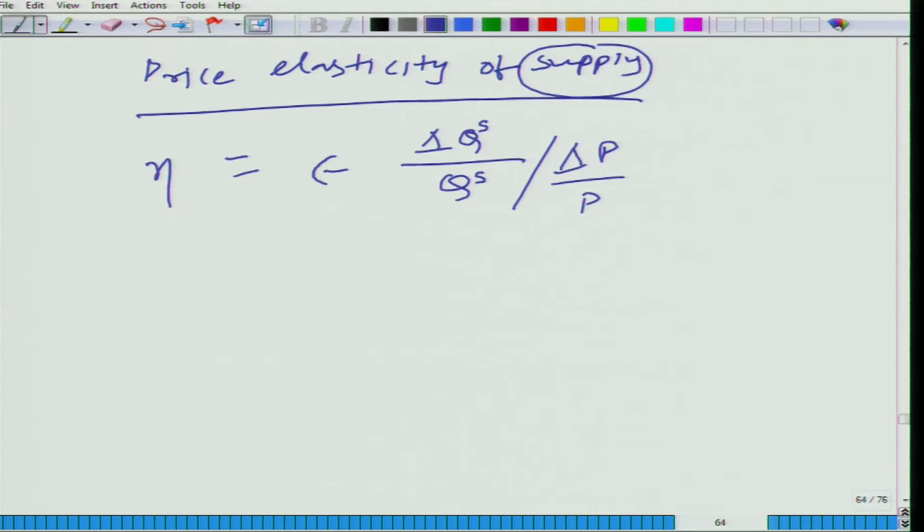The two differences that you should keep in mind: one, that demand function is a downward sloping function while supply function is an upward sloping function. So you should not put a negative sign there to make it positive, it is already positive.